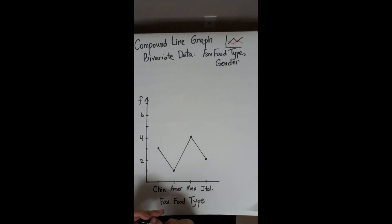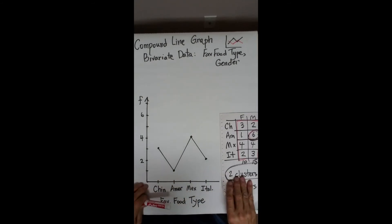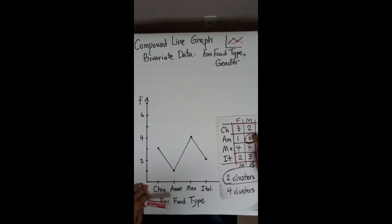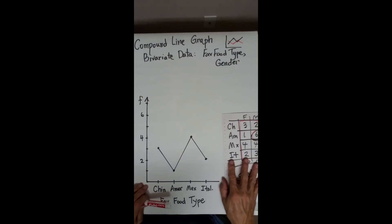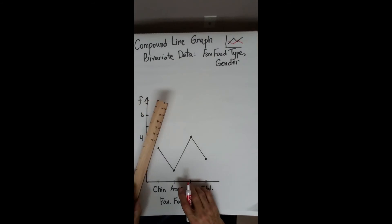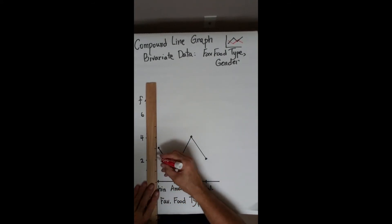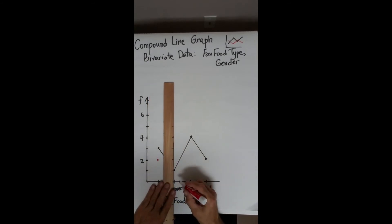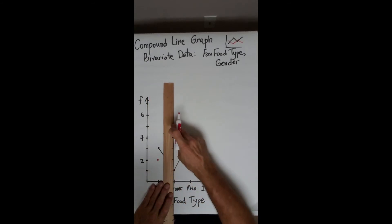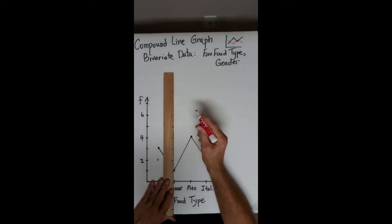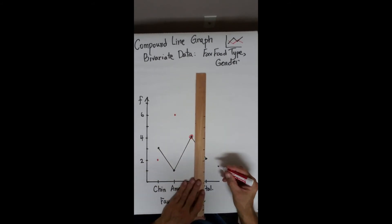I'll need a different color. We'll use red for males. Males had two, six, four, three. Two, six, one, two, three, four, five. Two, six. Now, they were the same as females, so we'll just circle here. And over here it was three.